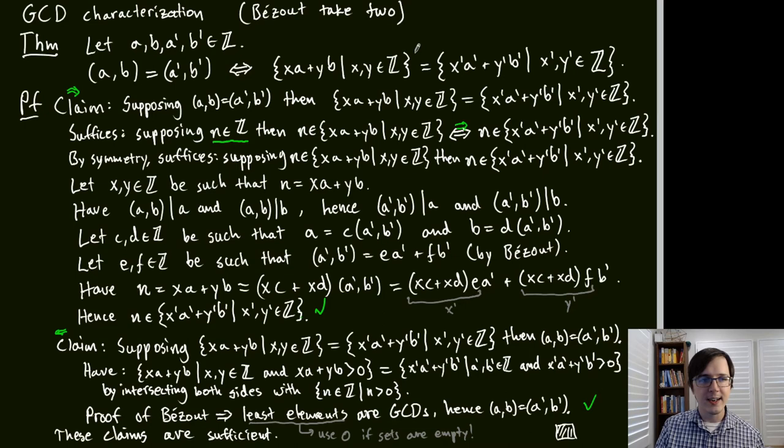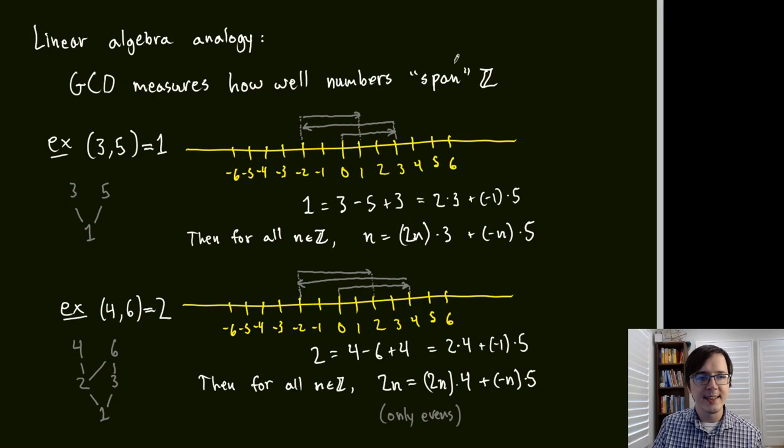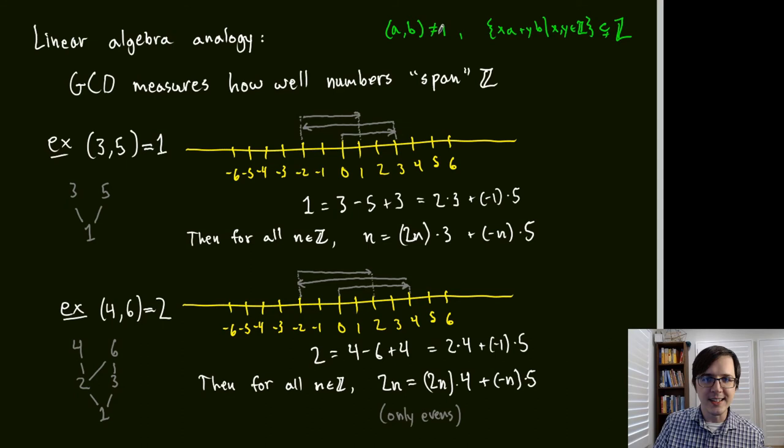A linear algebra analogy: the GCD measures how well numbers span ℤ. If gcd(A, B) ≠ 1, the integer linear combinations of A and B form a strict subset of ℤ. When gcd(A, B) = 1, they span all of ℤ.